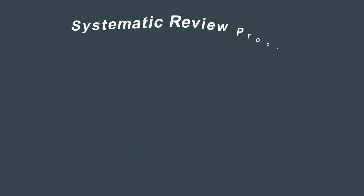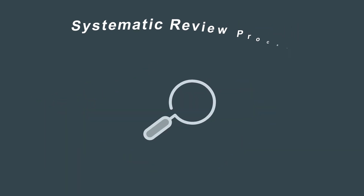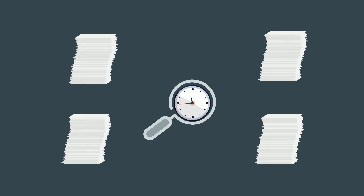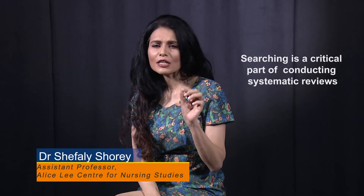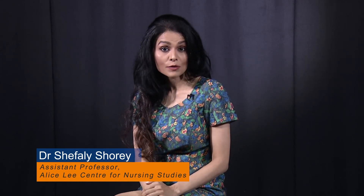The systematic review process begins with a systematic and comprehensive search. It is important to include all relevant literature in order to accurately reflect the current evidence on a specific topic. The process can be time and energy consuming as it involves searching on various electronic databases that do not have identical functions. Searching is a critical part of conducting systematic reviews, as any errors made in the search process potentially result in a biased or otherwise incomplete evidence for the review.